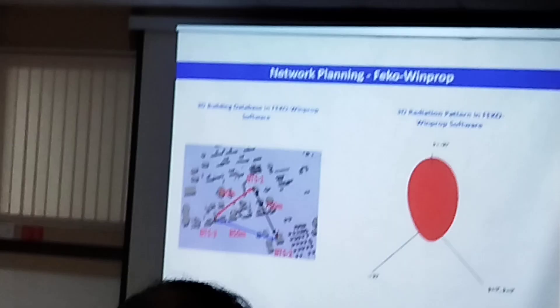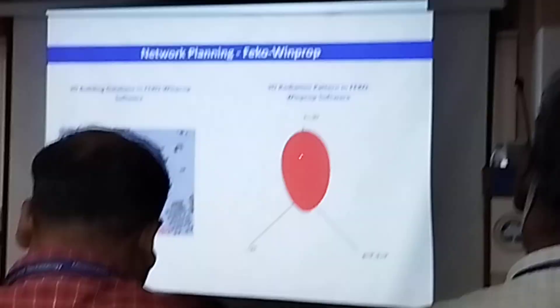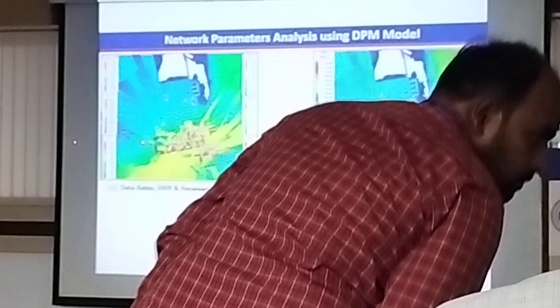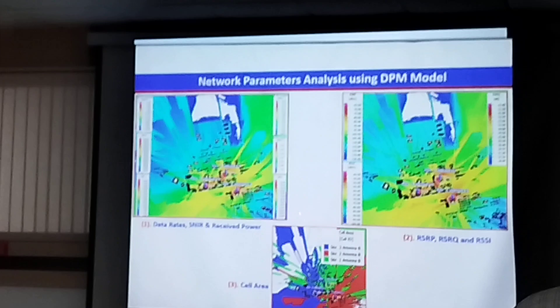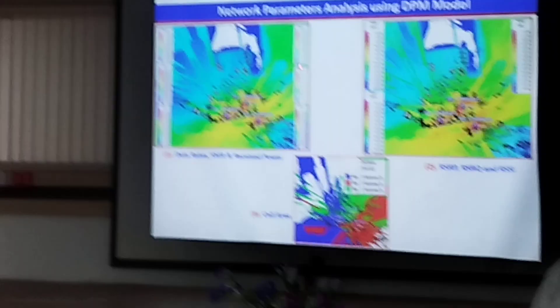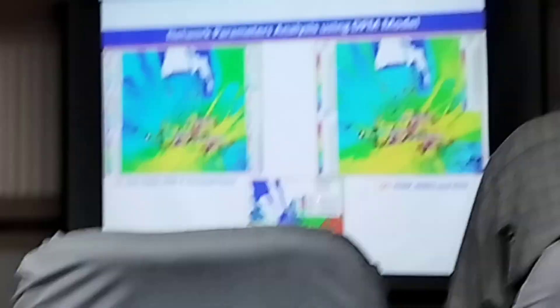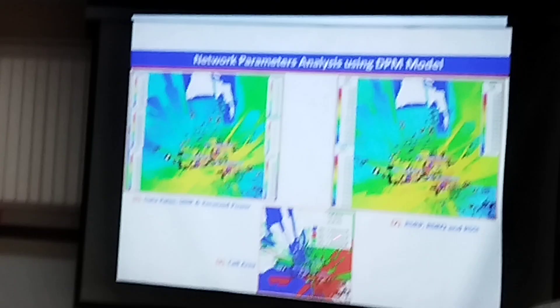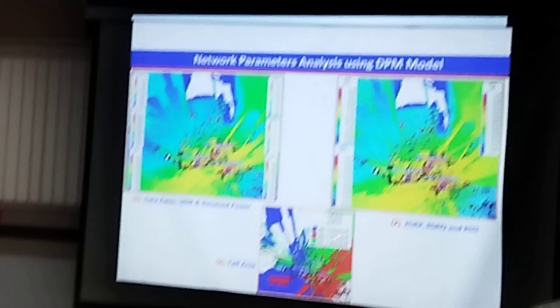You can calculate various parameters using this kind of software. This is how it looks like — three base stations are installed here. The colors indicate what is my data rate, throughput, signal strength, and each cell site. You can identify where to install the base station. This is called base station optimization — nowadays the telecom operators are doing all these things.